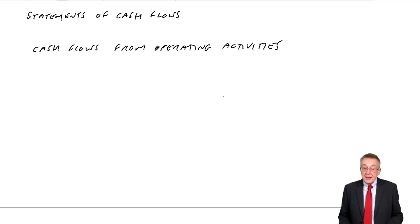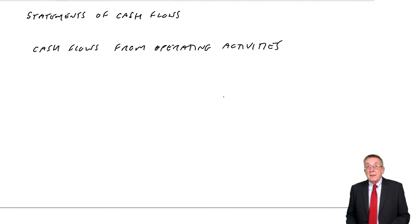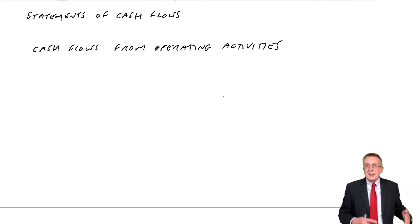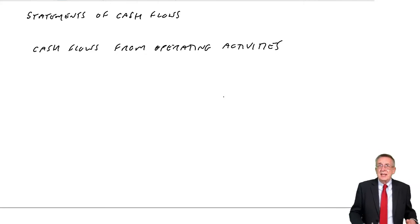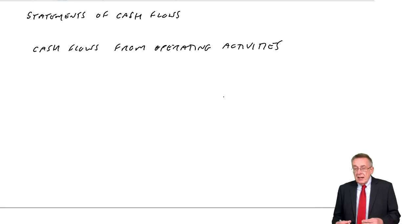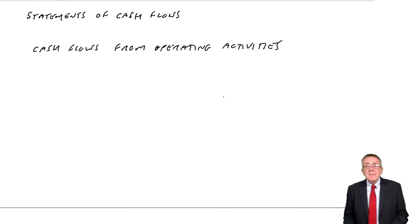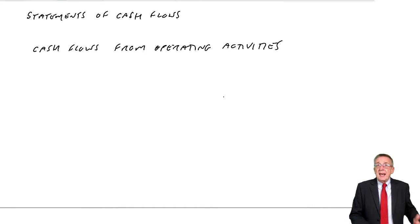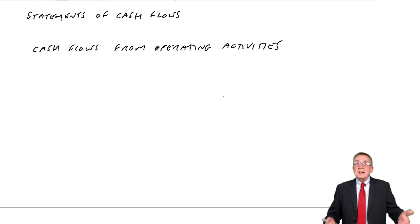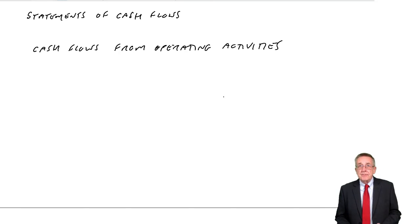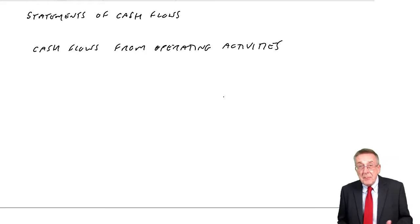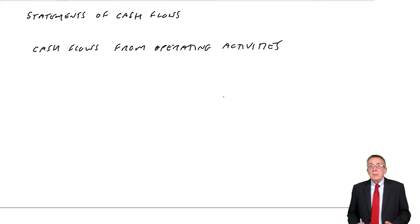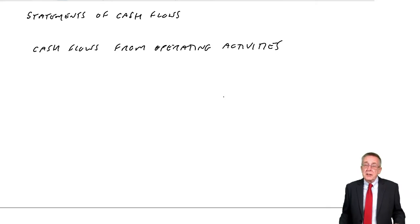We'll deal with them as I go through a full example. What we're talking about with operating activities is the ordinary trading — the sales less the cost of sales less the expenses. It's the profits we're generating.